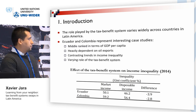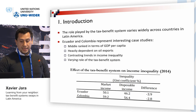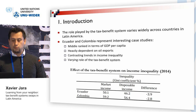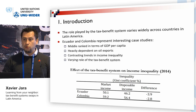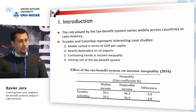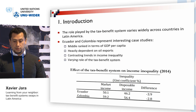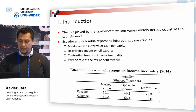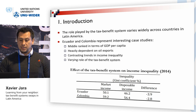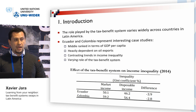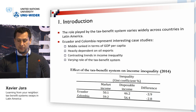The role played by tax benefit systems varies widely across Latin American countries, and Ecuador and Colombia present very interesting case studies. They are neighboring countries, middle ranked in terms of GDP per capita, and heavily dependent on oil exports. Furthermore, they present contrasting trends in income inequality and on the role of the tax and benefit system.